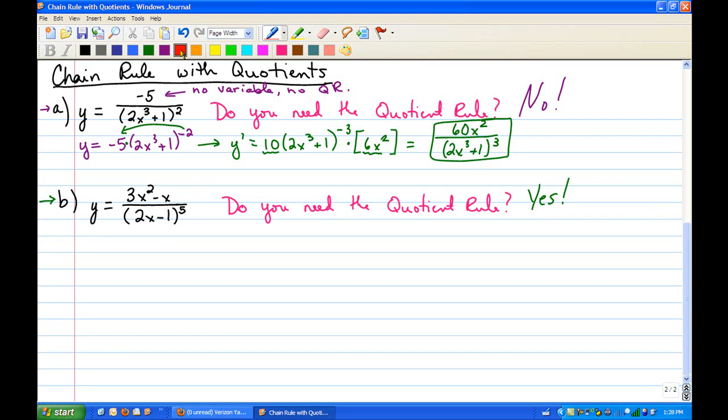So now that we know we have to use the quotient rule, then we need to know our high and our low, so that we can find our d high and our d low. So here's our high. Here's our low. Remember, we always want to actually write low first, because that reminds us that when we use the quotient rule, it starts with low. So the low is 2x minus 1 to the fifth.